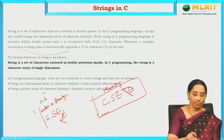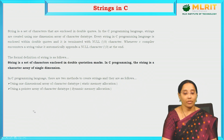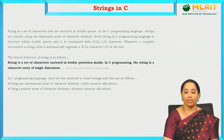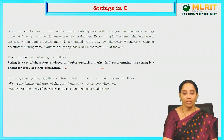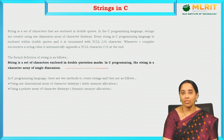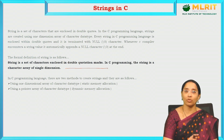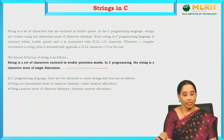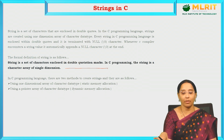The formal definition of the string is: a string is a set of characters enclosed in double quotation marks. In C programming, the string is a character array of single dimension — it is a one-dimensional array where all the data is in linear form. There are two methods to create strings: using a one-dimensional array and using a pointer array of character data type. By dynamic memory allocation also, you can declare your string.